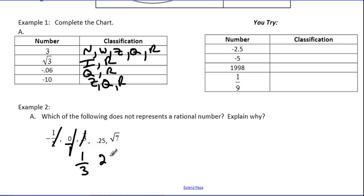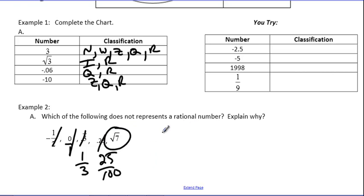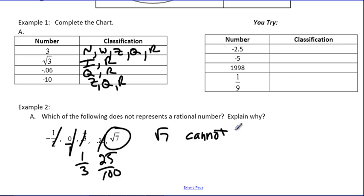0.25 is 25 over 100 — there's a fraction, so that's not the answer. The square root of 7, if you type that into your calculator, you're going to get some kind of crazy decimal that goes to the end without repeating. That's our winner. Because that decimal cannot be written as a fraction — the square root of 7 cannot be written in fraction form.